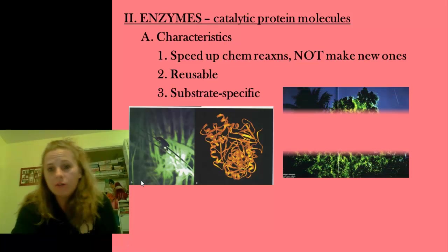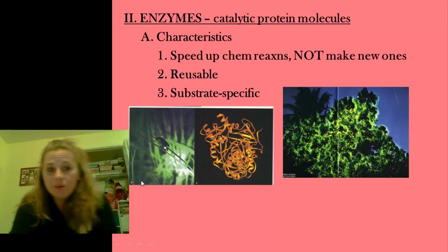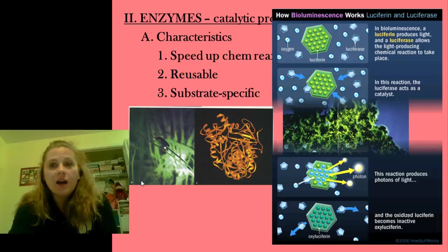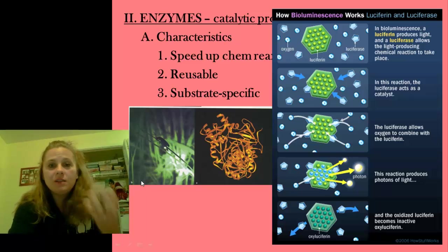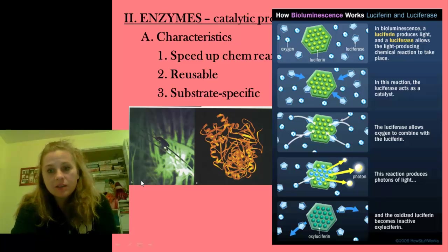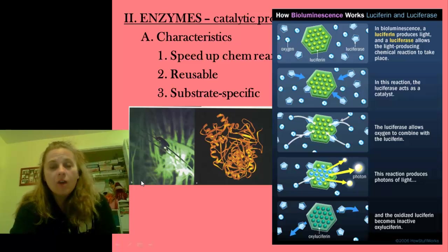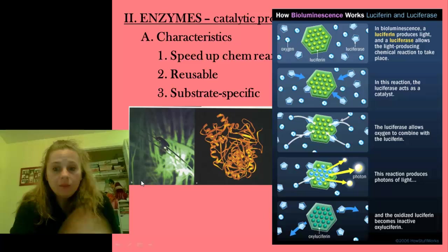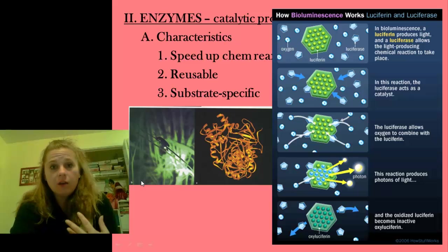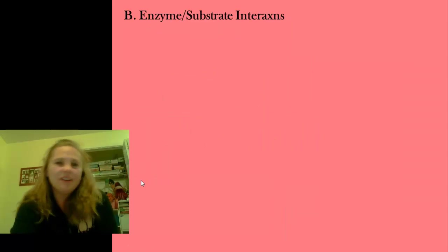Their glowing is what we call a form of bioluminescence, which is really cool. They have this protein in them called luciferin, and when a particular enzyme — luciferase — works on it, it basically binds to the protein and acts as a catalyst to allow oxygen to bind to the luciferin. When it does that, photons are released producing light. That oxidized luciferin is inactive afterwards — that's what the catalyst does. It binds oxygen to it to allow it to glow. Kind of neat.